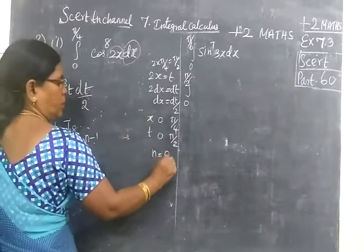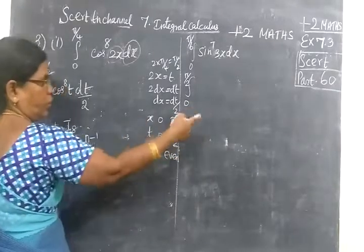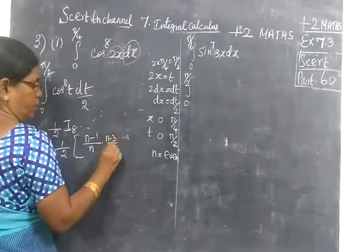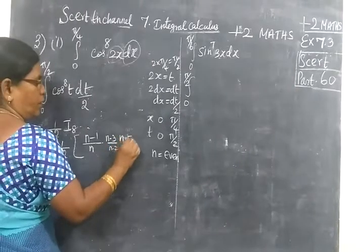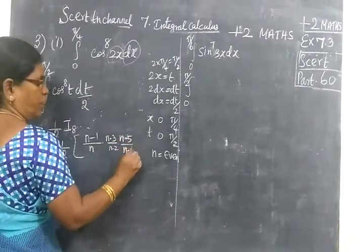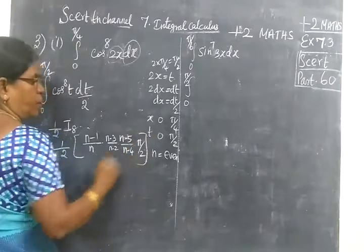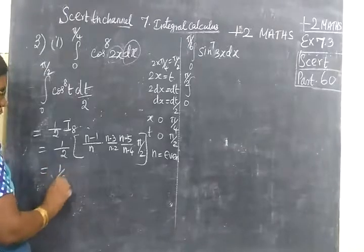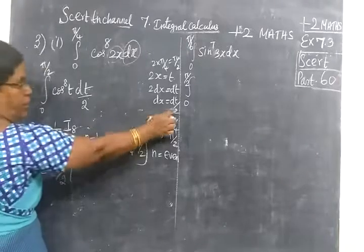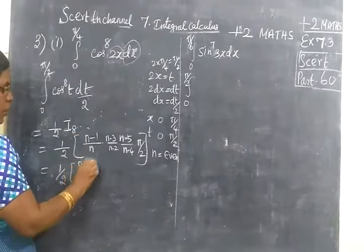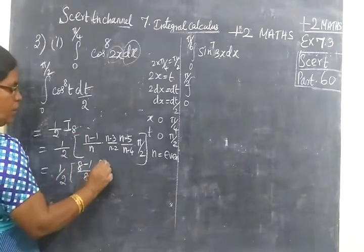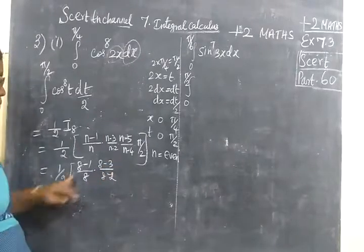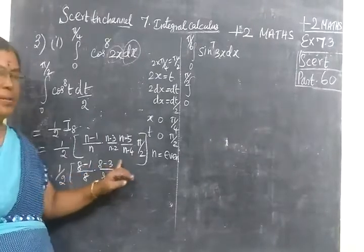Even n equal to even. N equal to odd. N equal to even. So n minus 1 by n, n minus 3 by n minus 2, n minus 5 by n minus 4, etc. Last time I know we are π/2. Even group last time π/2. So equal to half. Redding the half. And the length of it. Ending what you write 8. So 8 minus 1 by 8.